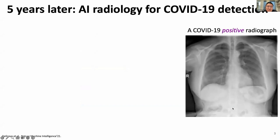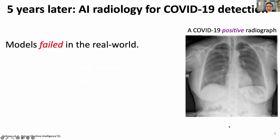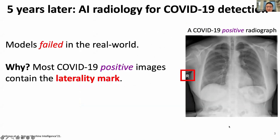Is he right? So exactly five years later, in 2021, there are AI radiology models for detecting COVID-19, which looks exciting for fighting against the pandemic. However, they failed catastrophically on real-world data. So why? What's the reason?